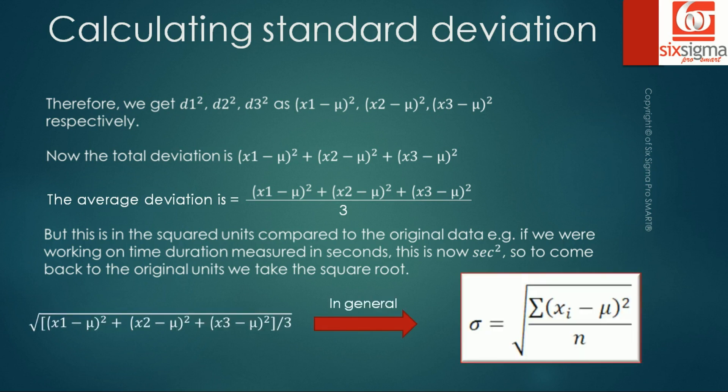If we were to generalize this for xi in general, for a given mean mu and n data points rather than only three data points, then this is what the standard deviation looks like. What we just computed is the standard deviation of a population.